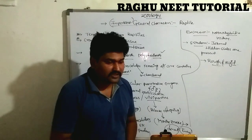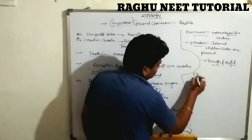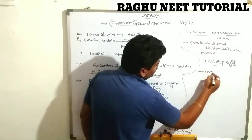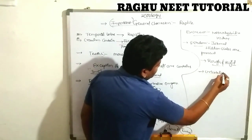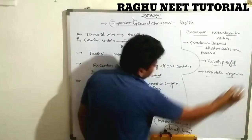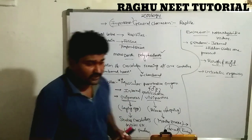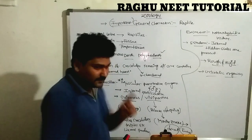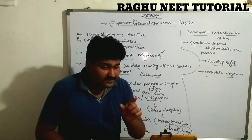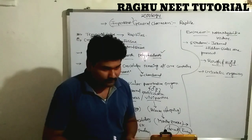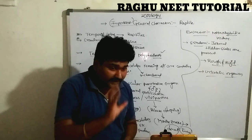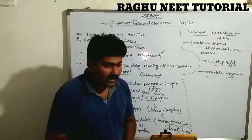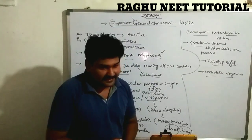Excretion: all reptile organisms are uricotelic — meaning they excrete uric acid. Very importantly, reptiles are also oviparous — the eggs are released outside the body, development occurs outside, and the egg converts into a new adult after hatching. The type of embryonic layers involved in this development is also an important topic.